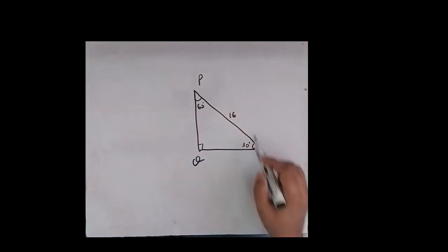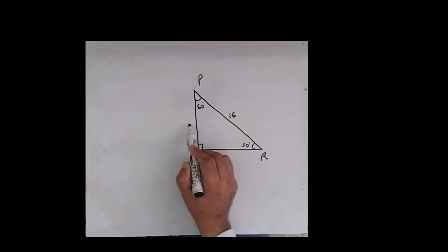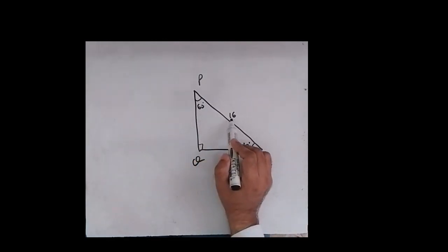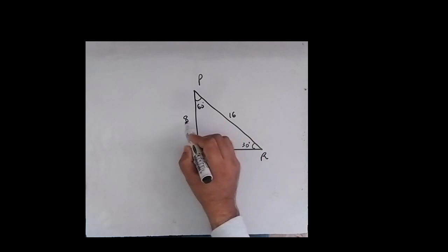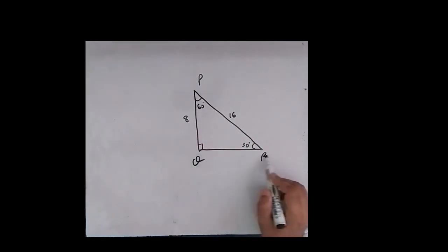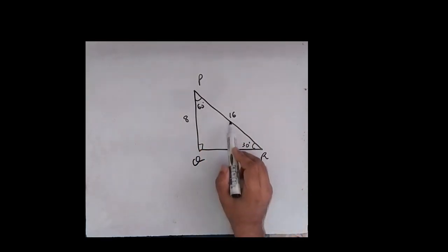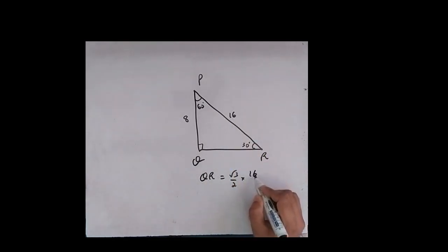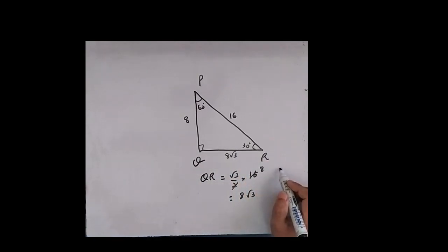According to the 30-60-90 theorem, the side opposite to 30 degrees is half of the hypotenuse. The hypotenuse is given as 16, so the side opposite to 30 will become half of 16, that is 8. What about the length QR? The side opposite to 60 degrees is (√3/2) of the hypotenuse. So QR = (√3/2) × 16 = 8√3. The length of QR is 8√3. Did you get the same answer?